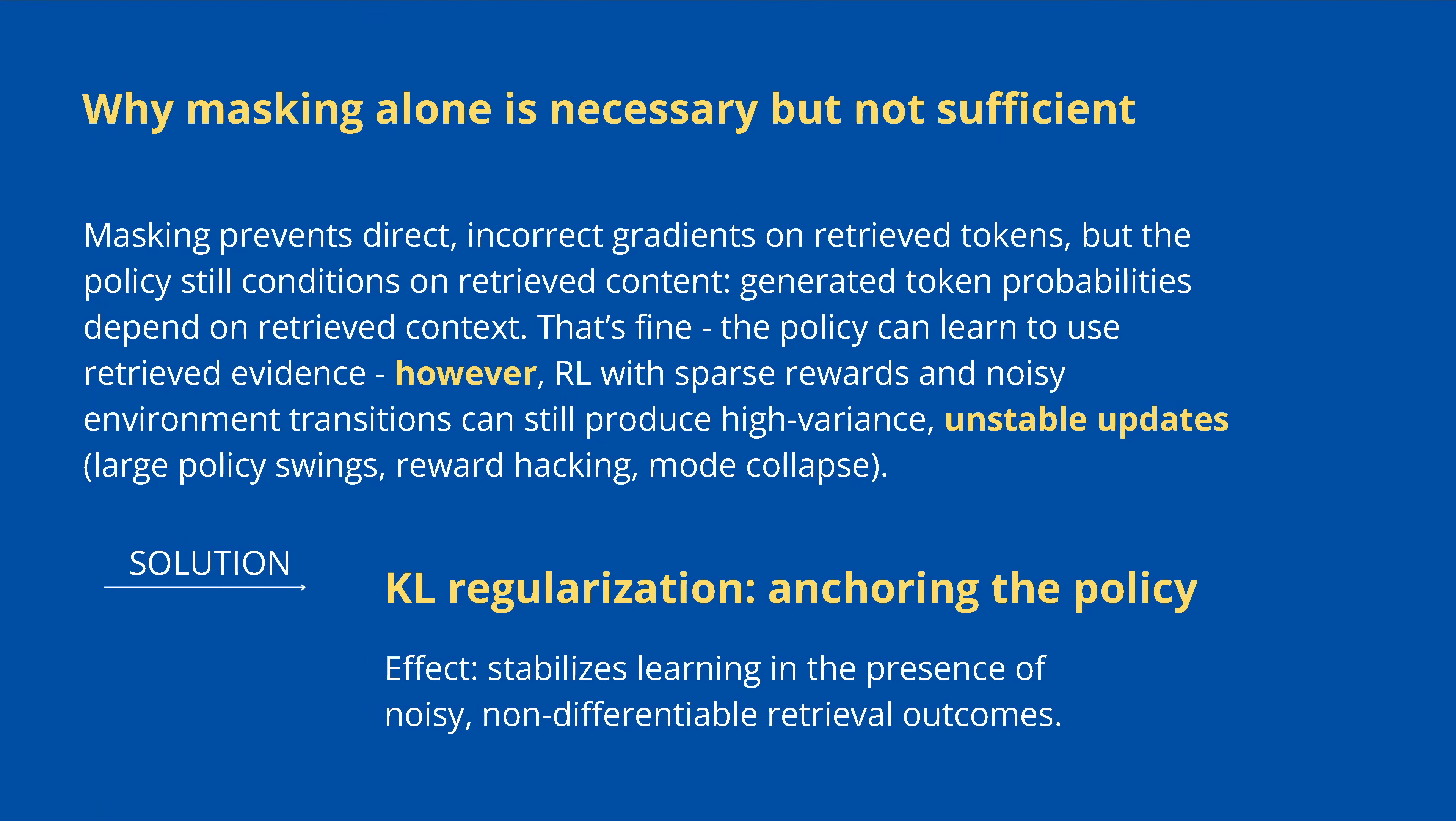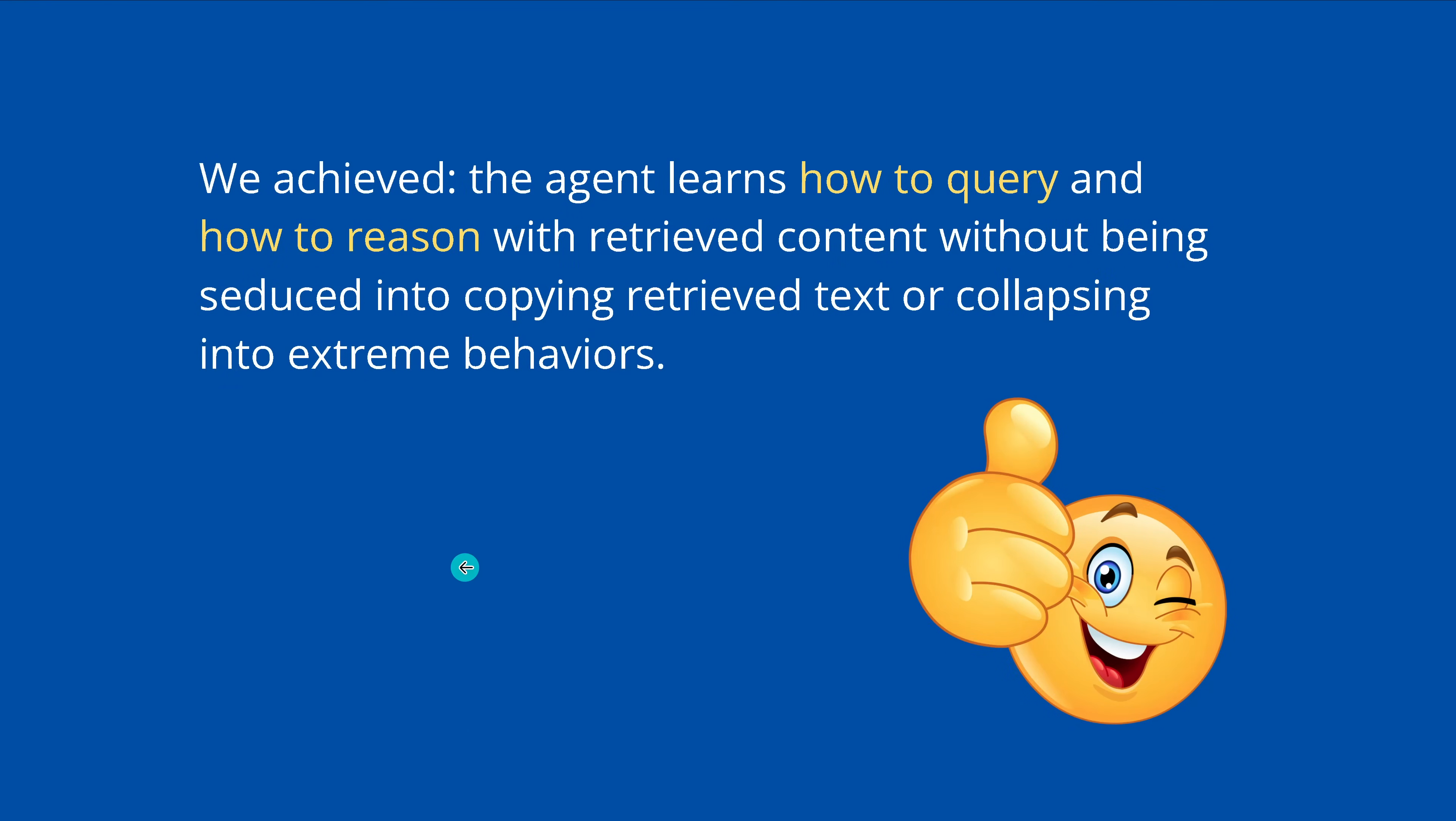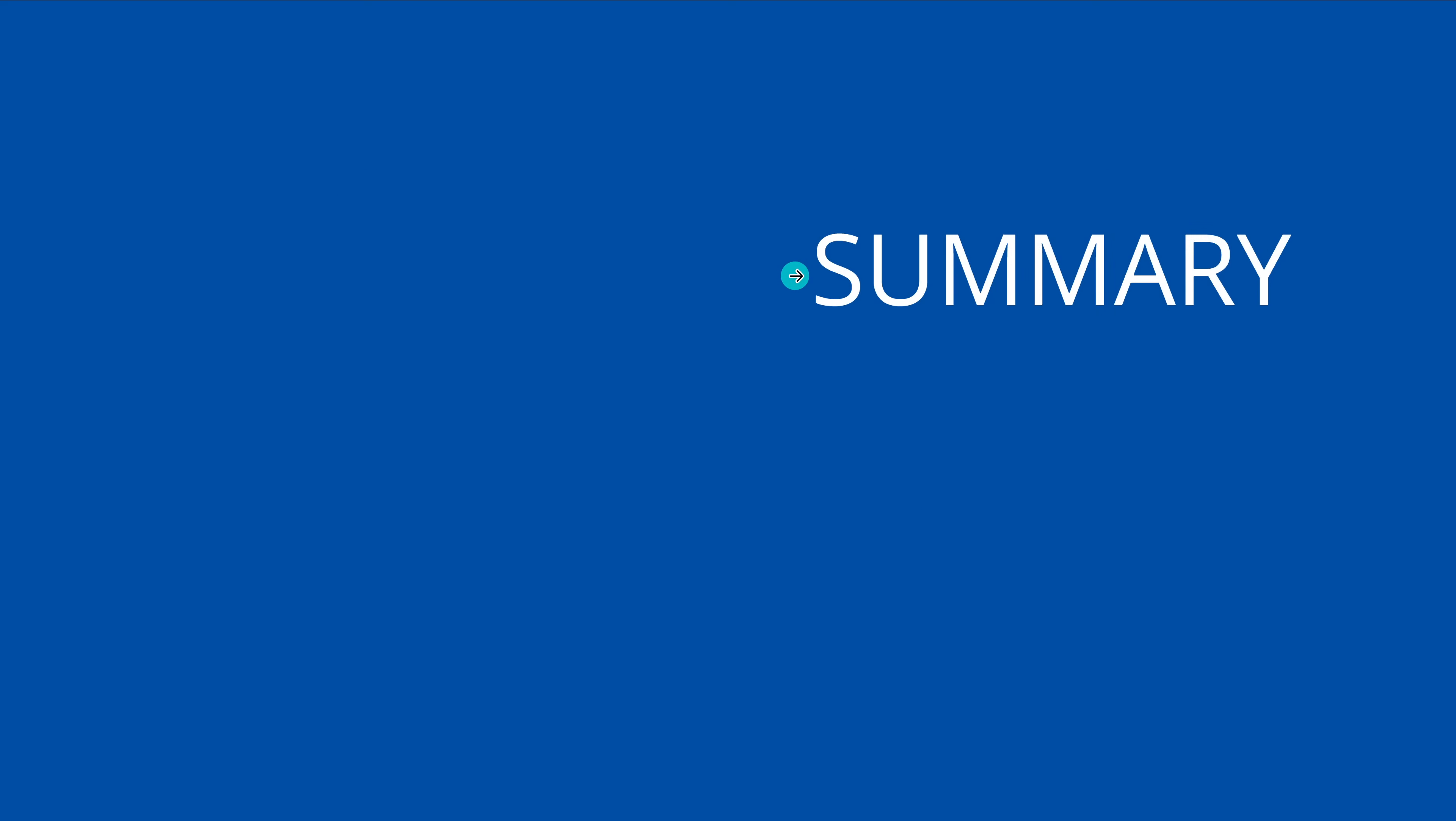But they also found playing with the system that masking alone is necessary, a necessary condition, but it's not a sufficient condition. Because, if we work with sparsely rewarded and noisy environment transitions, we have a high variance and this leads to unstable updates and maybe even a mode collapse. But we have a solution for this behavior. The classical toolbox solution is a Kullback-Leibler regularization to anchor the policy pi theta. The fact is, it stabilizes the learning rate. So you see, we just reuse the tricks that we know are working and we use it here also on new topics. So here we achieved it. The agent now learns how to query and how to reason at the same time with the retrieved content without being seduced into copying the retrieved text or collapsing into some extreme behavior we're not looking for.